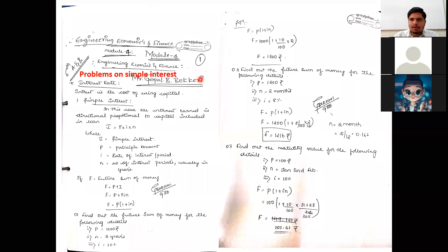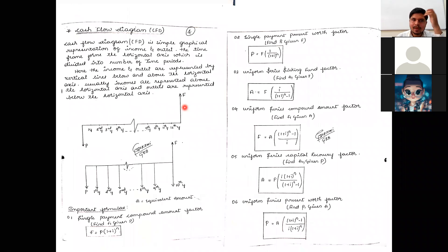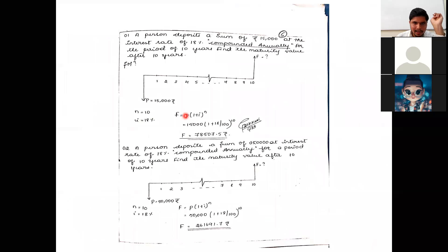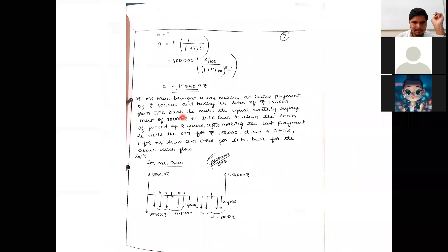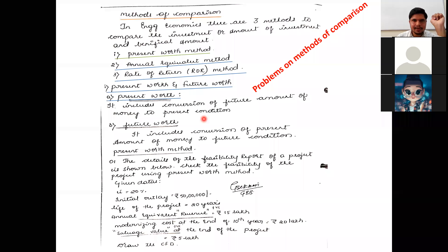So far we have discussed totally four types of problems in Module 4. The first type: problems on simple interest. Second type: problems on compound interest. Third: problems on single payment and uniform series. And fourth: problems on the uniform gradient series.